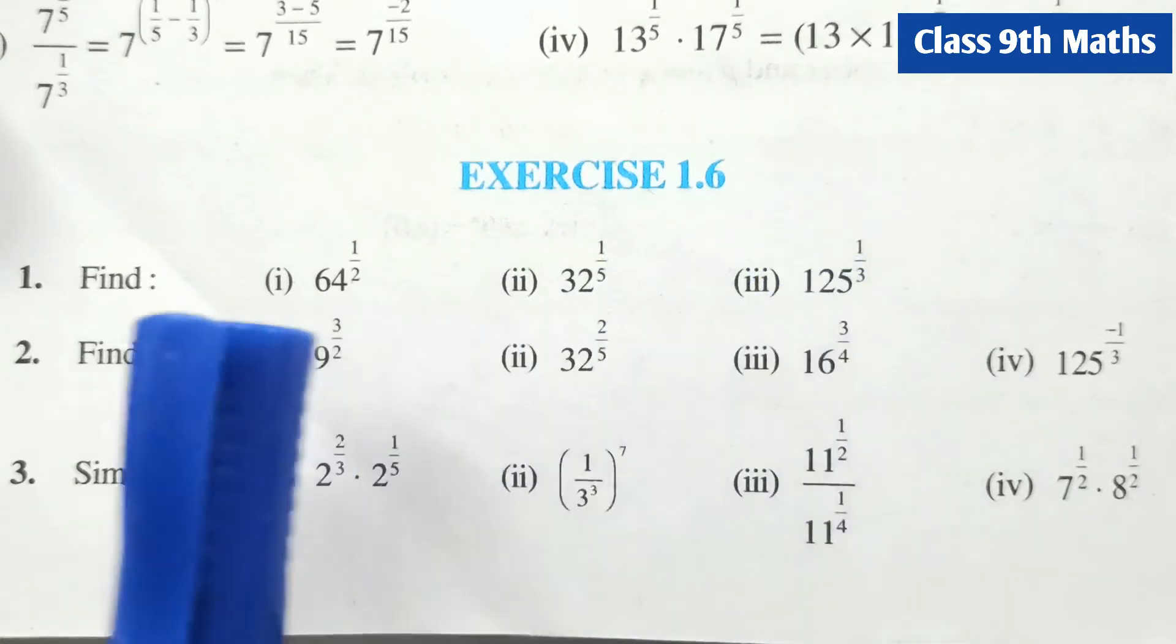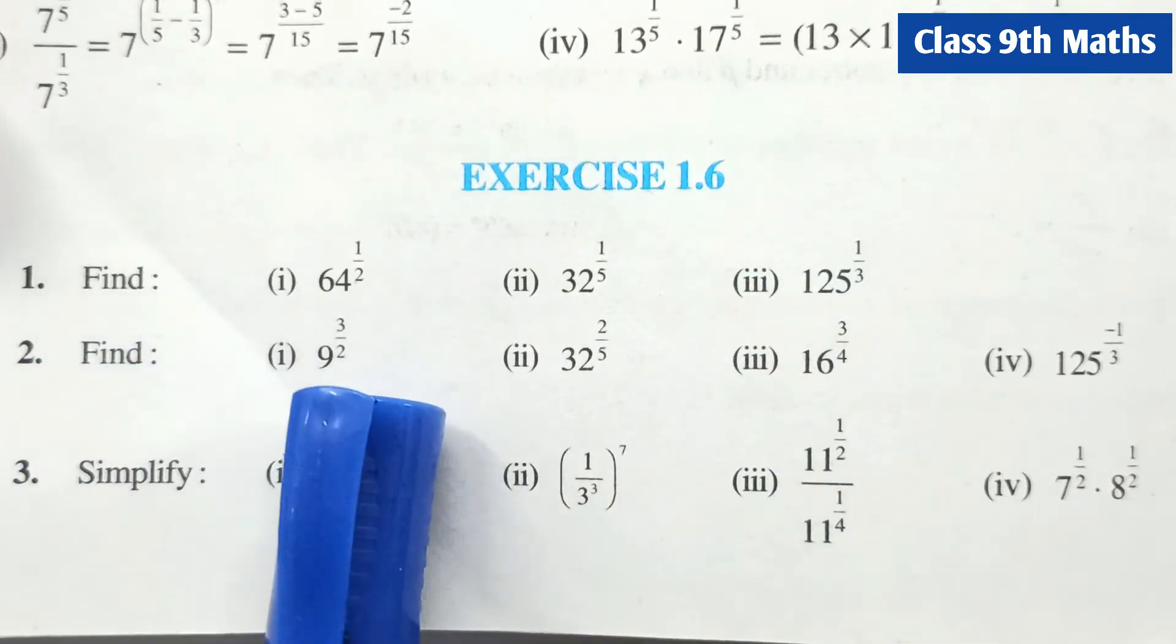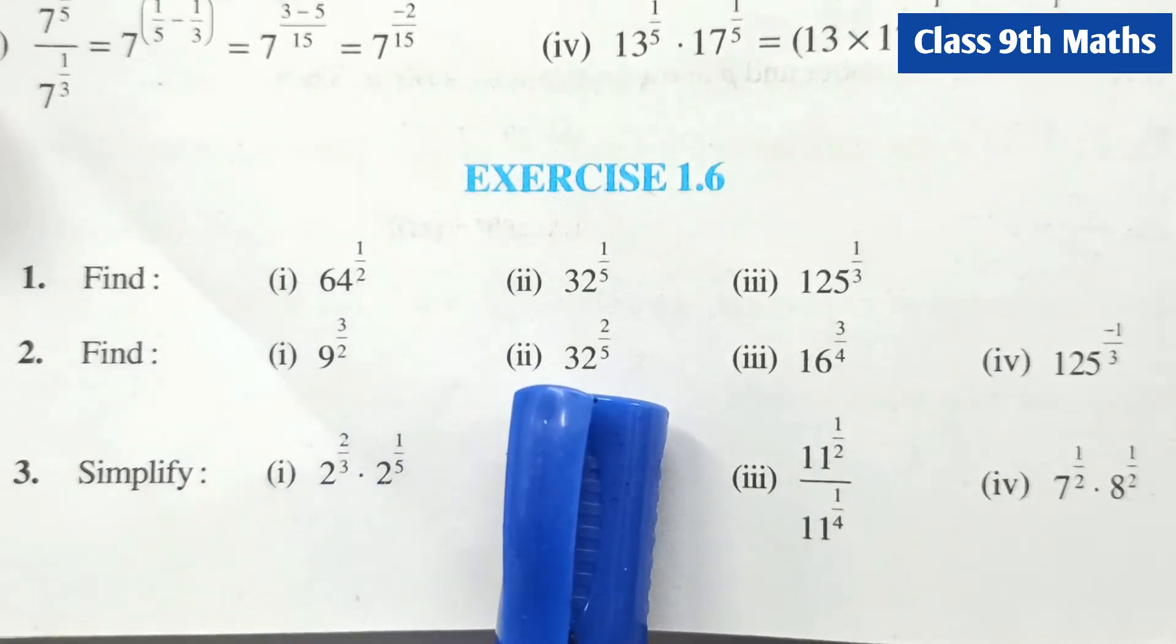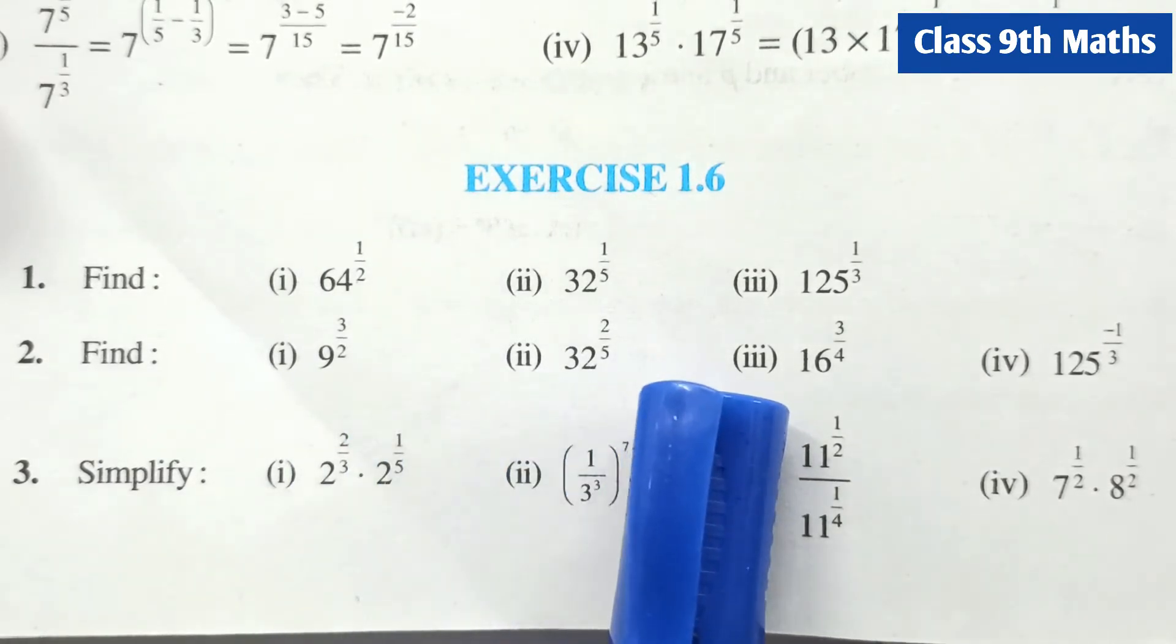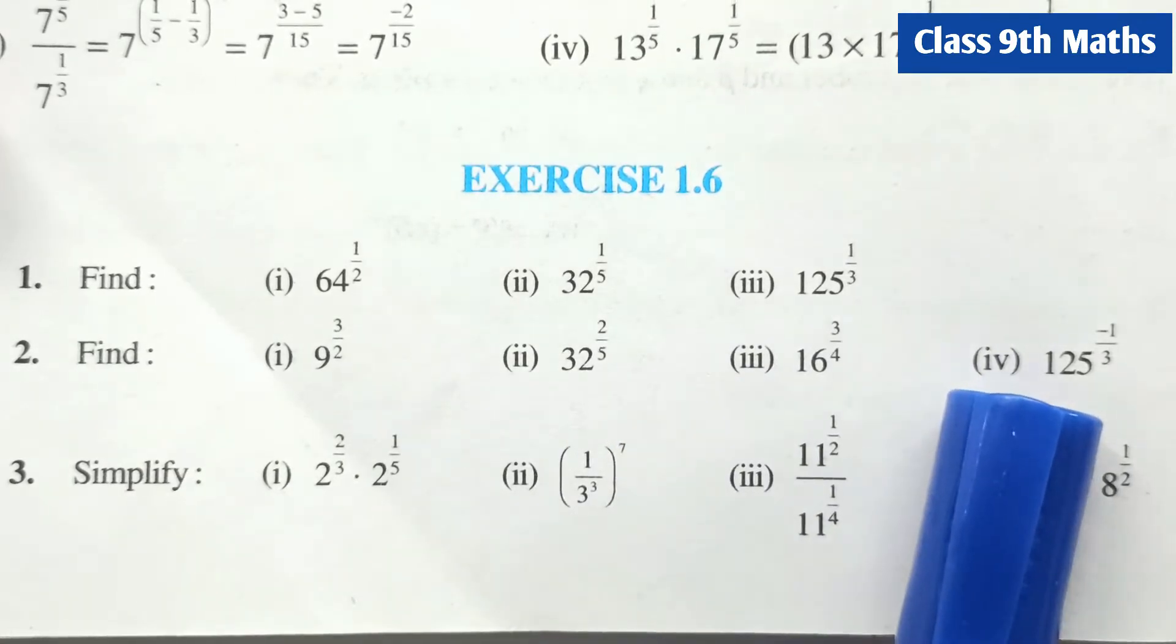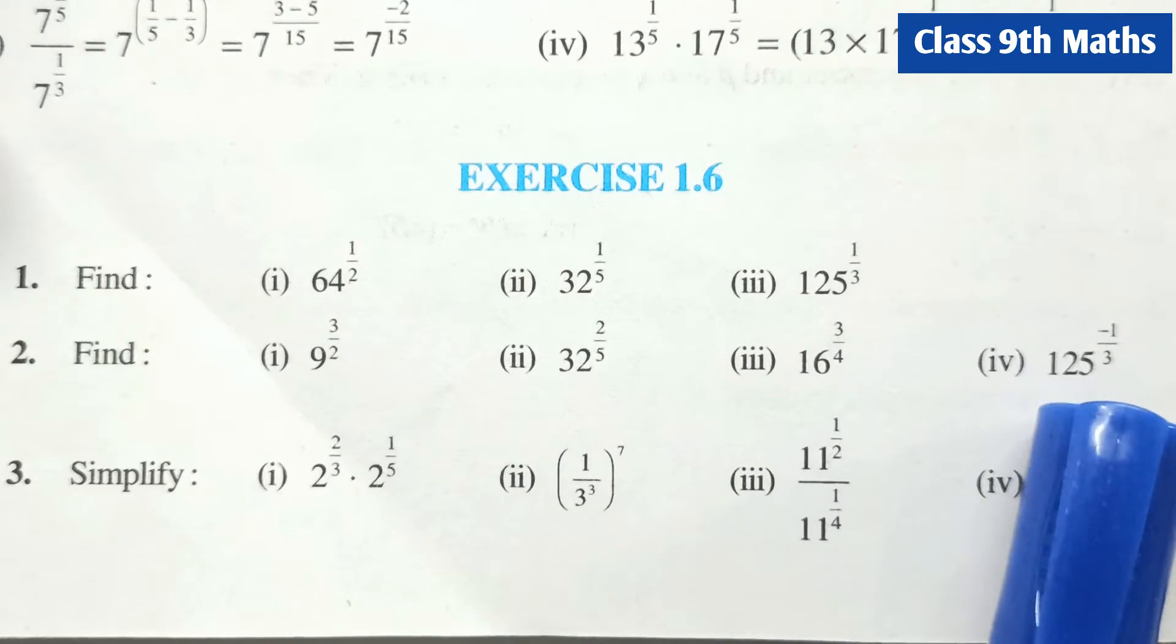Class 9, exercise 1.6, 2nd question. 1st part is 9^(3/2), 2nd part 32^(2/5), 3rd is 16^(3/4), and 125^(-1/3).